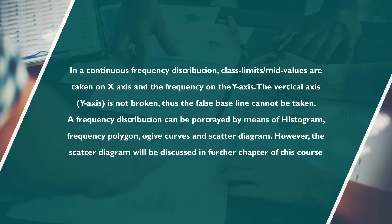These graphs are useful in locating positional averages such as mode, median, and quartiles, which we already covered in measures of central tendency. In a continuous frequency distribution, class limit mid-values are taken on the X-axis and frequency on the Y-axis. The vertical Y-axis is not broken, so a false baseline cannot be used. A frequency distribution can be portrayed by means of histogram, frequency polygon, ogive curve, and scattered diagram.